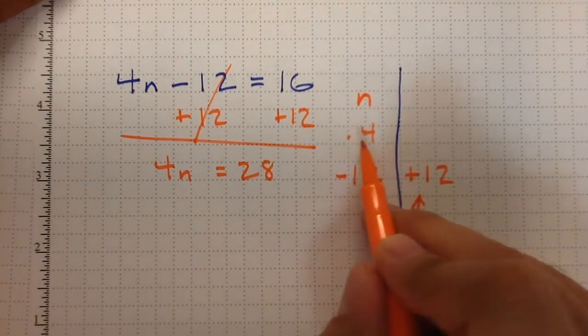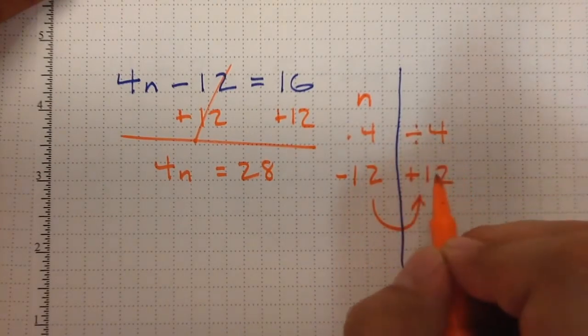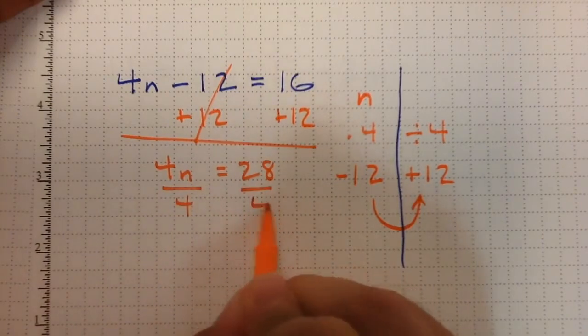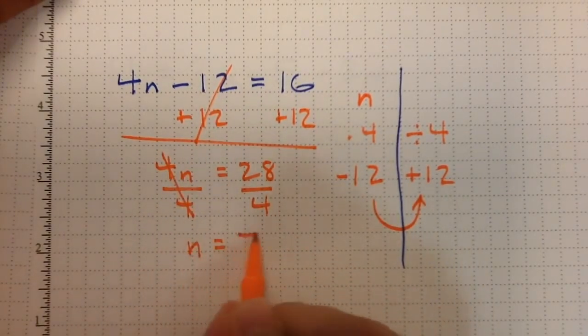Then I keep going reverse order. The first thing they did was multiply by 4, so that's the last thing I'm going to do, which is to divide by 4. Divide by 4, divide by 4. So I get n equals 7.